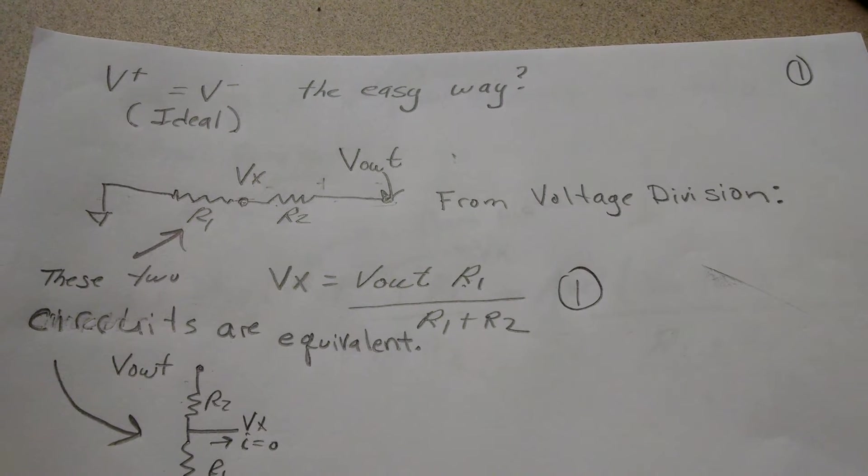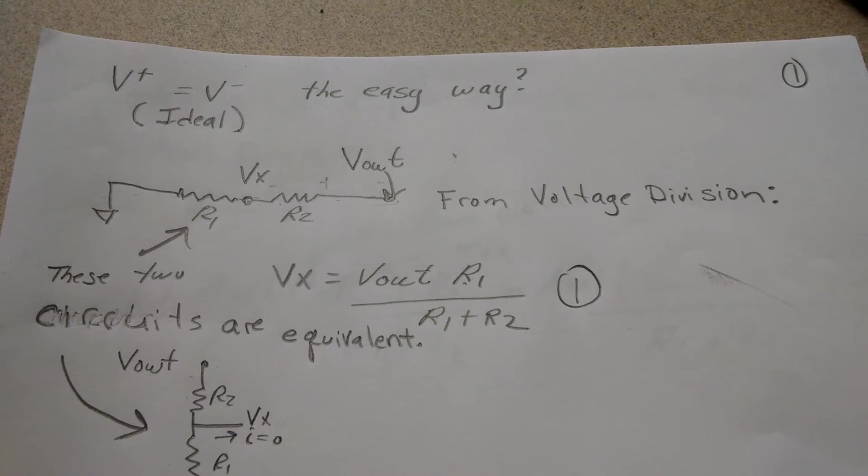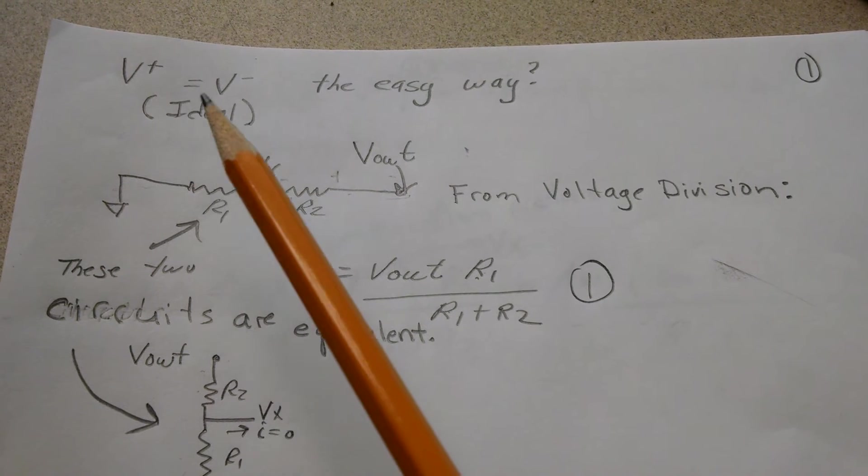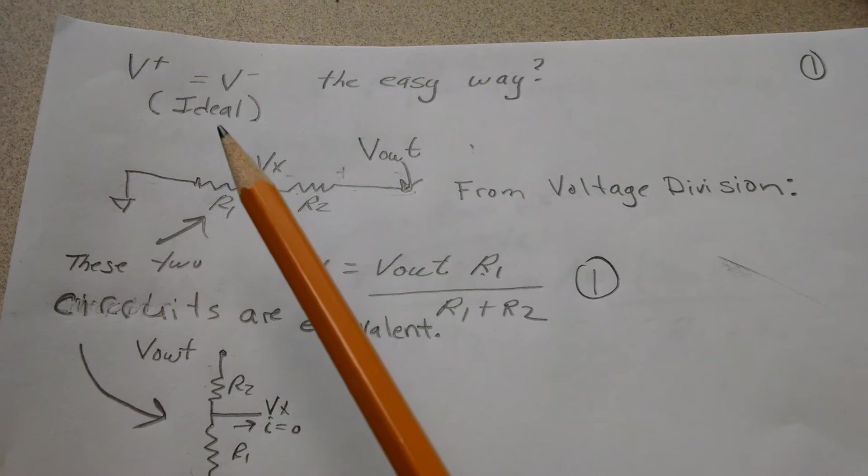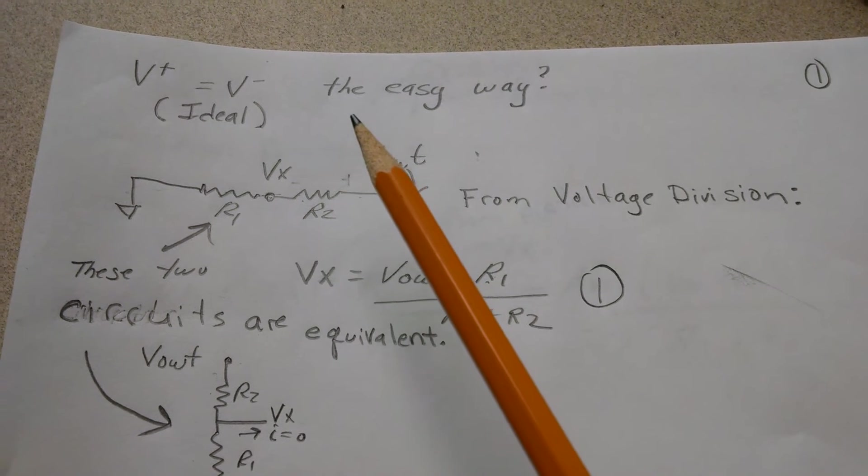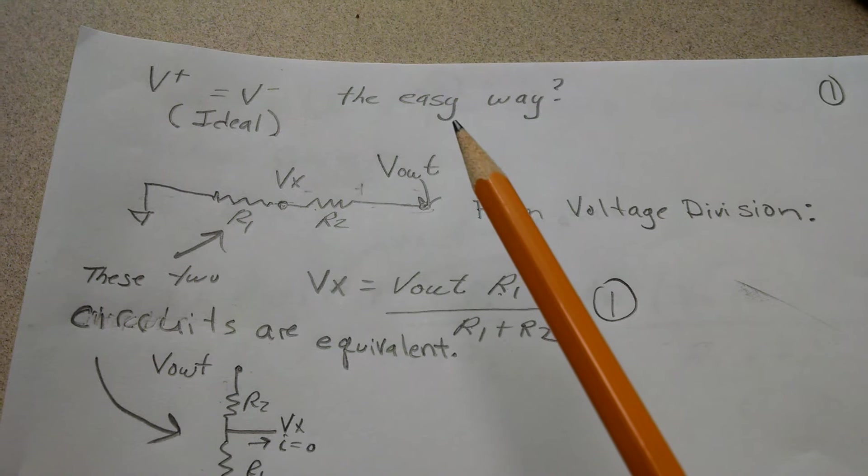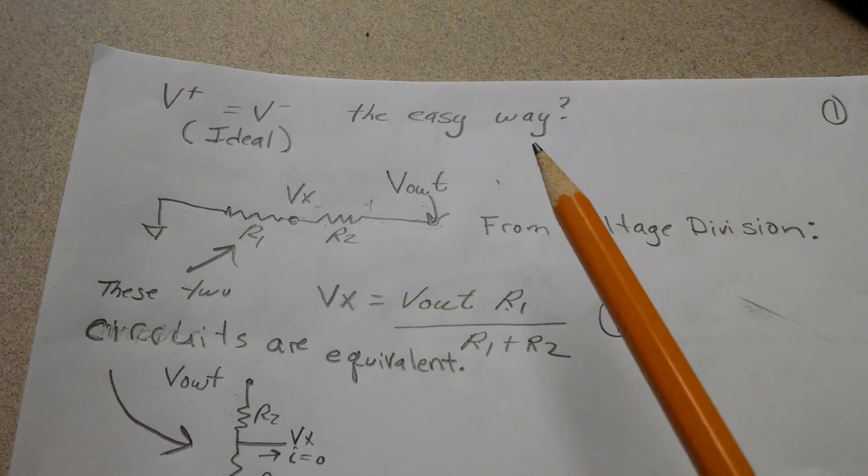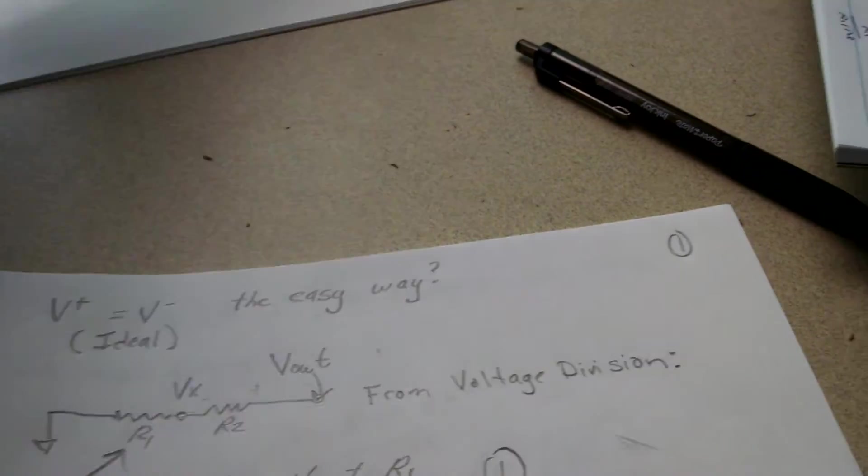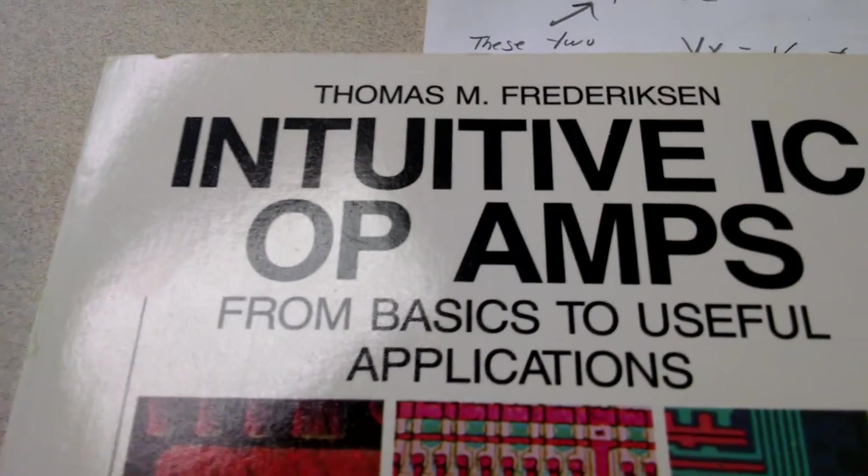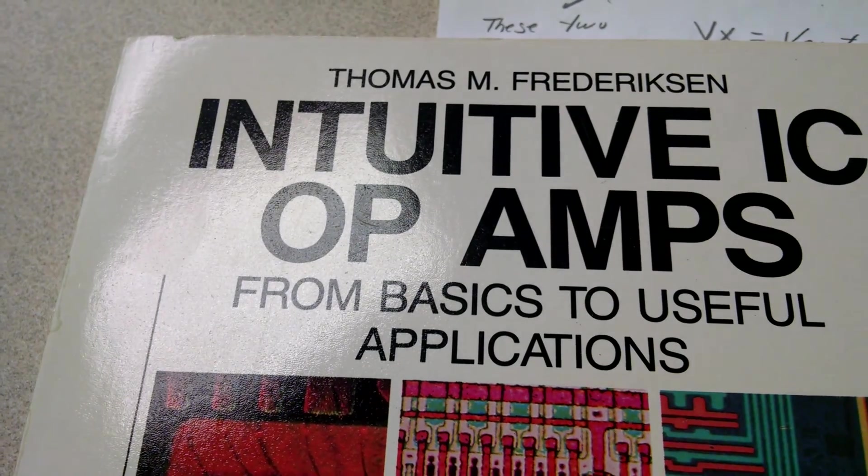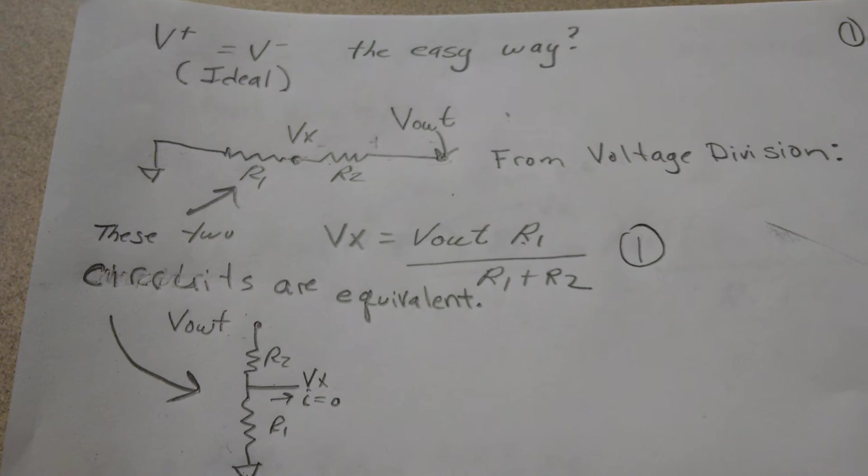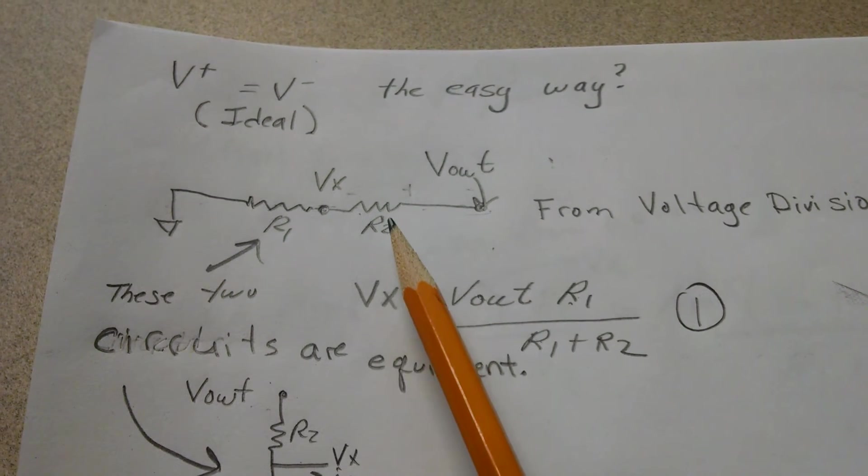Here's another video from Shaky Hand Productions. It's proving in an op-amp that V+ equals V- for an ideal op-amp. I've done this using KCL and nodal analysis, but there's a book, Intuitive Op-Amps by Thomas Freckerson, that suggests maybe there's a more intuitive way, even though there's still some algebra.